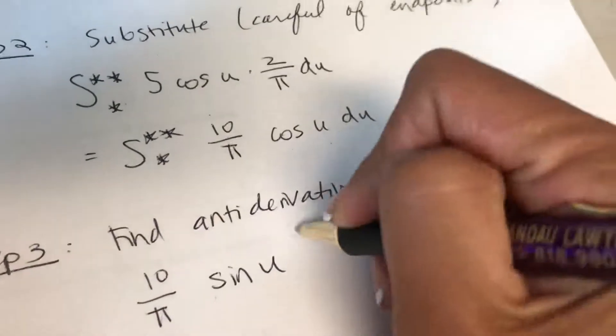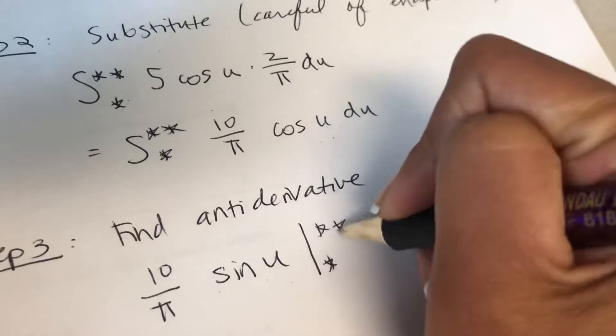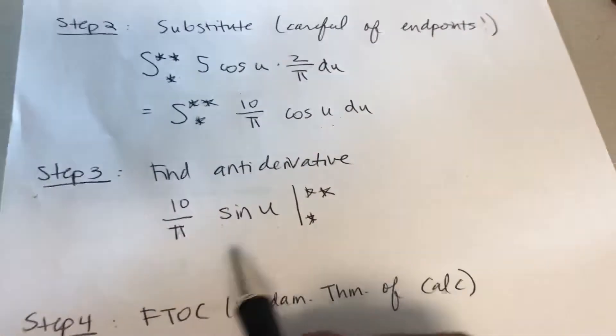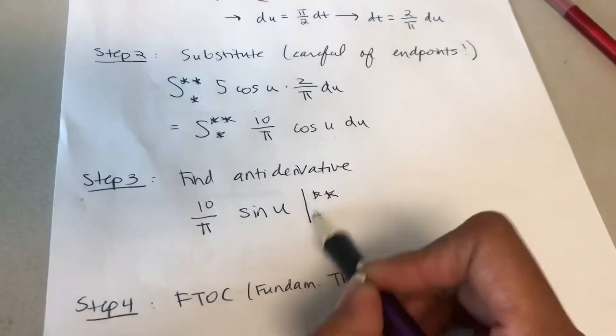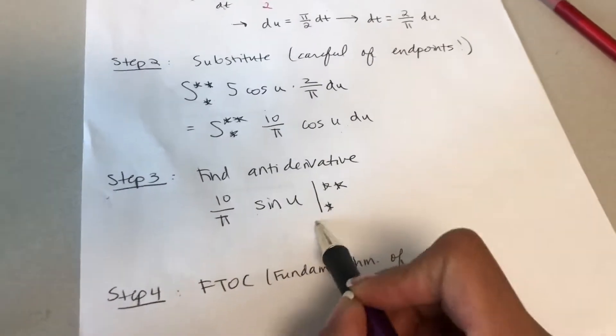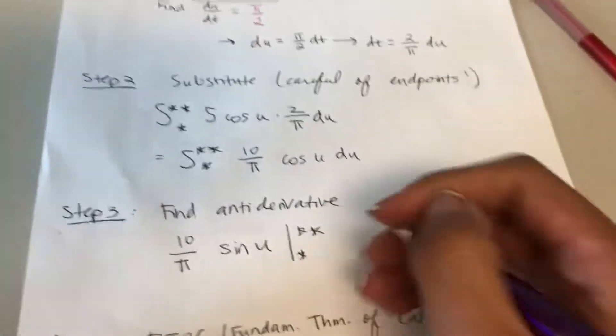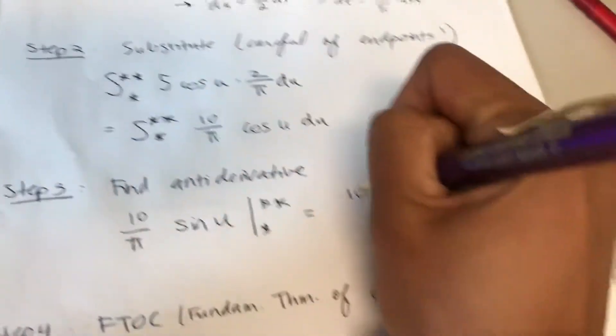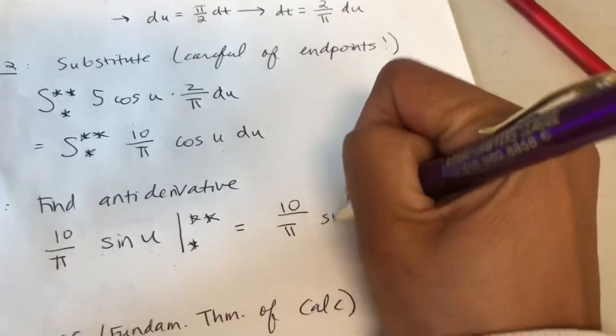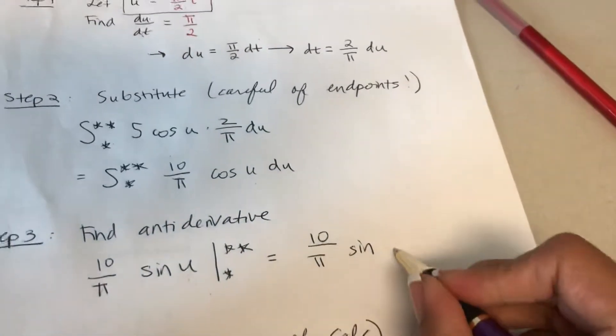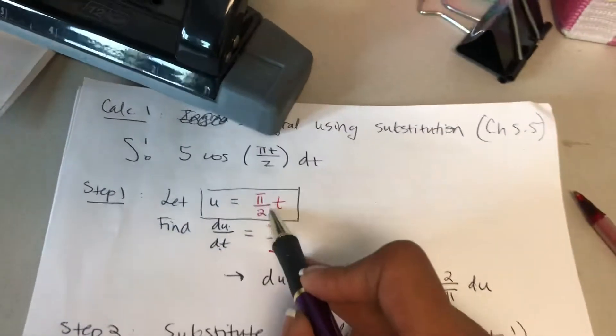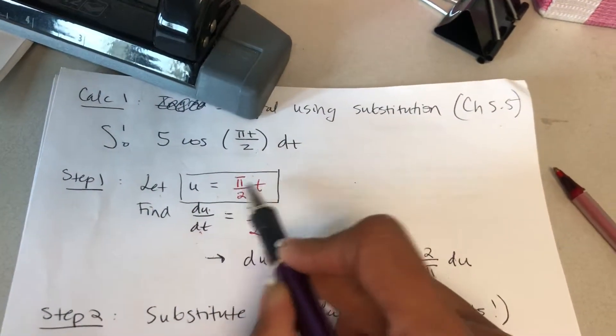So sine u, and this goes from star to double star. At this point, when I see the star and double star, it reminds me oh yeah, this is in terms of u. I need to go back to my original variable, which is t. I'm gonna rewrite this now as 10 over pi. Instead of sine u, I'm gonna replace the u with this thing that I boxed up here, pi over 2t.